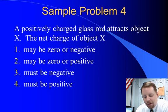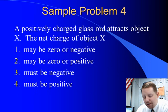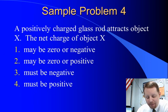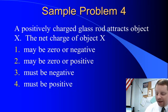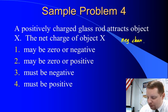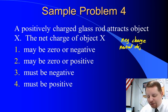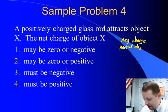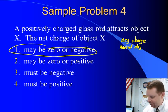Sample problem: a positively charged glass rod attracts object X. The net charge of object X may be: zero or negative, zero or positive, must be negative, or must be positive. A positive charge can attract a negative charge or a neutral object, so the net charge of object X, which is attracted to that positively charged glass rod, can be either zero or negative.